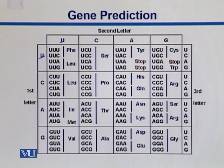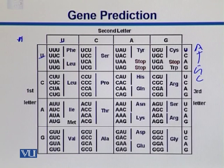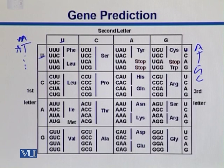We can have U in each position — U, U, U — and it encodes phenylalanine. There are 20 amino acids and four nucleotides. If a codon were one nucleotide, we could represent only four amino acids. If it were two nucleotides, we'd have 16 possible combinations — still not enough for 20 amino acids. Molecular biologists concluded that each codon is actually made up of three nucleotides, giving us 64 possible codons.